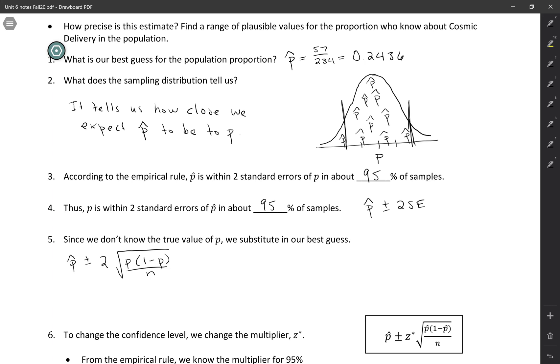We don't know the true value of p, right? That's the whole point of this, is that we're trying to estimate that. So we just have to substitute in our best guess, which again is the sample proportion, p hat. That's our best guess right now.